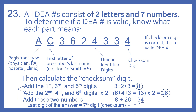The checksum digit has to be calculated. You add the first, third, and fifth digits. With this example, we add 3, 2, and 3, which gives us 8. Then we add the second, fourth, and sixth digits and multiply by 2: 6 plus 4 plus 3 is 13, times 2 gives us 26. Adding those together: 8 plus 26 is 34. The last digit — the ones place — is the checksum. It should be 4, and it is 4, so this is a valid DEA number.